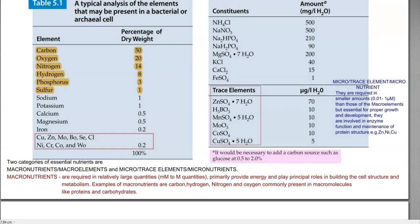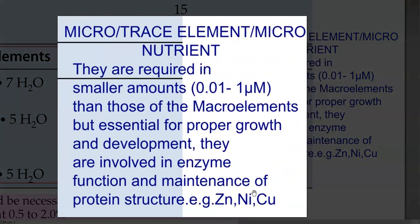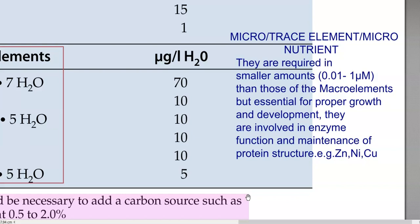Examples of macroelements include carbon, hydrogen, nitrogen, and oxygen — commonly present in macromolecules such as proteins and carbohydrates. Microelements or trace elements are required in small quantities, especially at 0.01 to 1 micromolar concentration, for proper growth and development. They may not be required in large quantities like macroelements, but they are essentially required for proper growth and development of organisms.